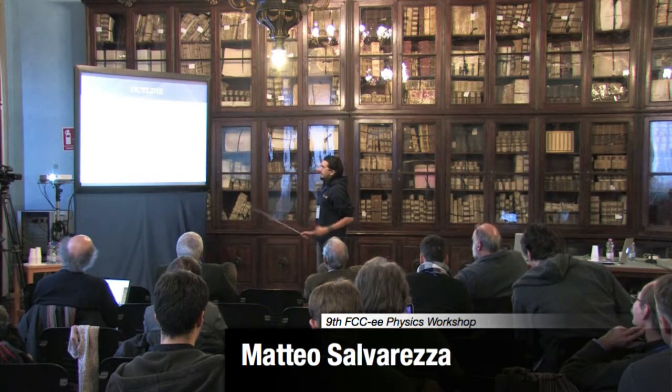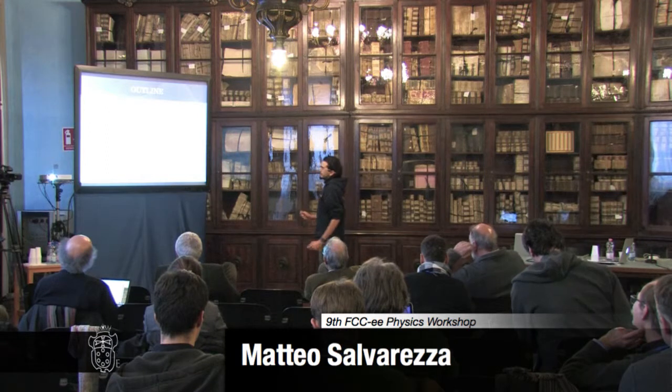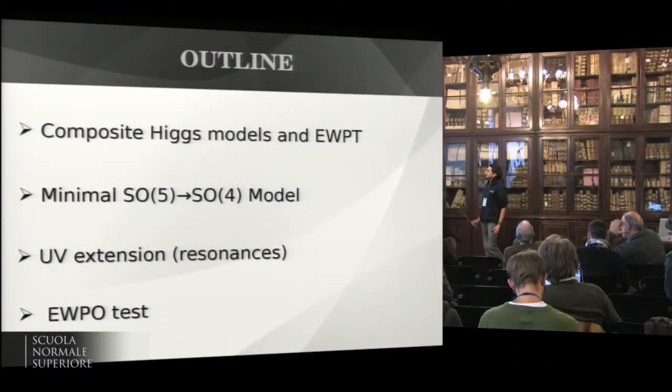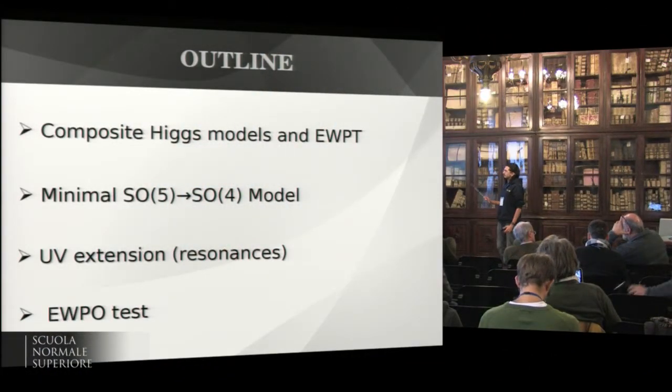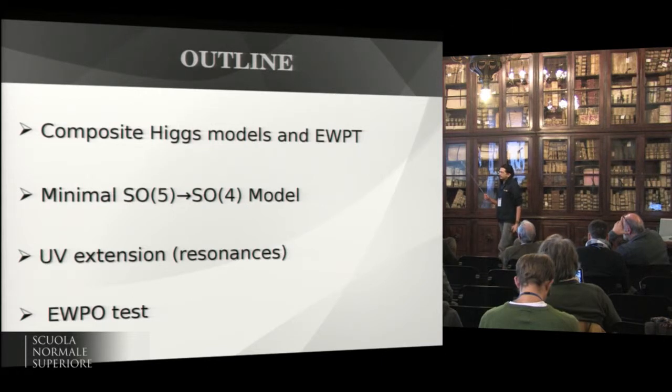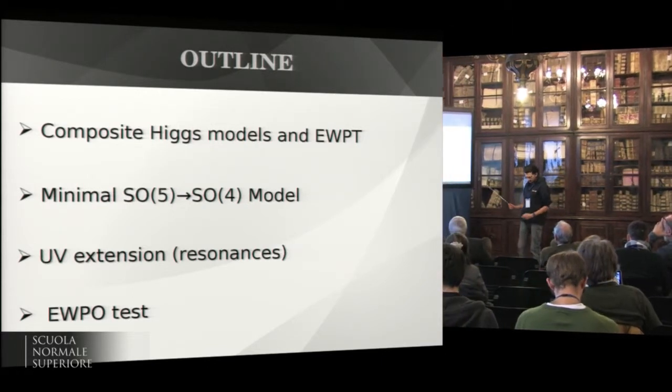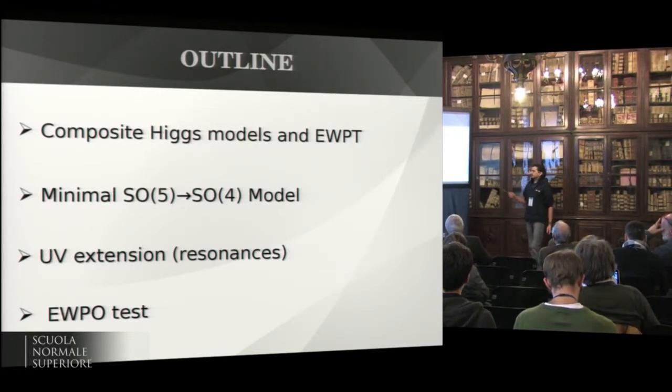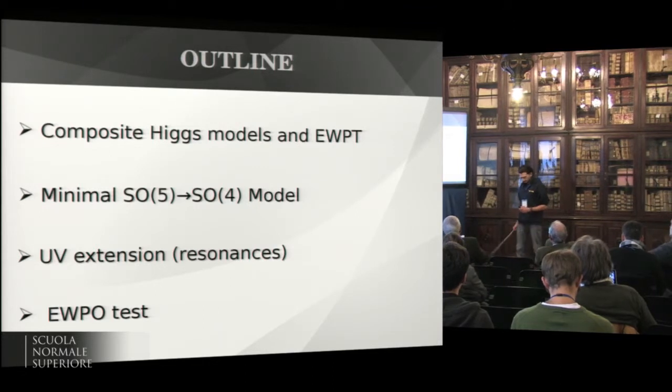So this is an outline. First, I will talk about Composite Higgs model and electroweak precision tests in general. Then I will focus on the minimal model. Then I will make some UV extension of this model adding resonances, and I will test such a model with electroweak precision observables.